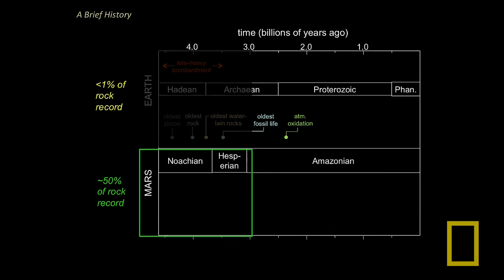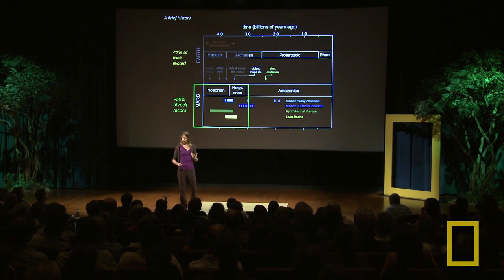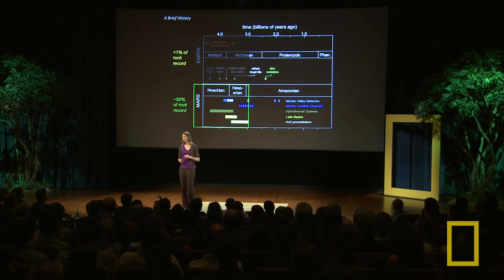As a planetary geologist, I'm very fortunate — I can look to other worlds for clues about what was going on during the first billion years of solar system history. That takes us to Mars, where over the last 10 years we've learned that at different points in history, Mars had rivers and lakes, Mars had catastrophic outflow channels releasing large volumes of water, and Mars had a number of environments that we would recognize today on Earth — hydrothermal systems, lake basins, groundwater systems — that, acidic or not, if we found these on Earth today, they would be places where we would find life.